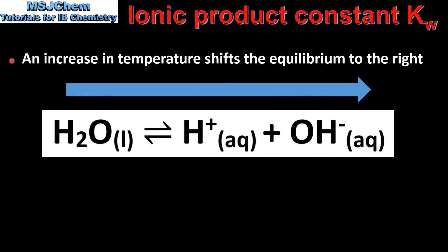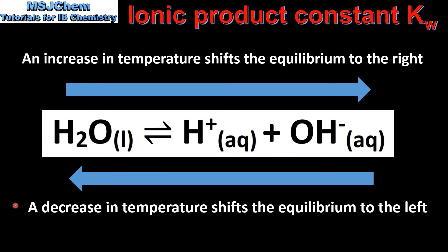Because the forward reaction is endothermic, an increase in temperature will shift the equilibrium to the right, so when the temperature increases the concentration of the hydronium ion and the hydroxide ion will increase. Because the reverse reaction is exothermic, a decrease in temperature will shift the equilibrium to the left, so when the temperature is decreased the concentration of the hydronium ion and the hydroxide ion will decrease.